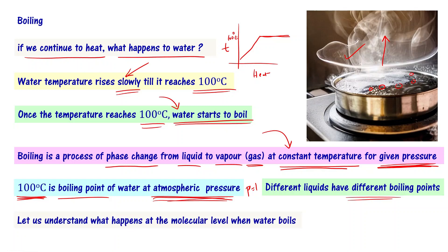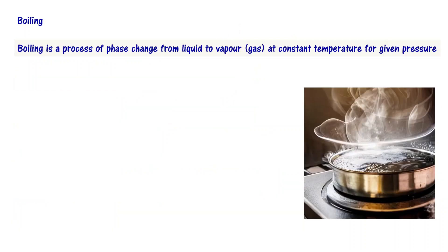Let us now understand what happens to the liquid at the molecular level when it is boiling. Boiling is a process of phase change from liquid to vapor at constant temperature for a given pressure. At 1 atmospheric pressure, water boils at 100 degrees centigrade.